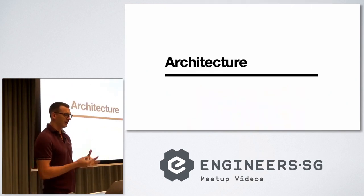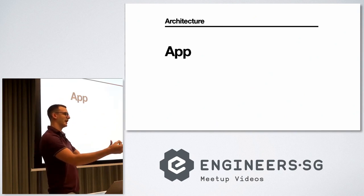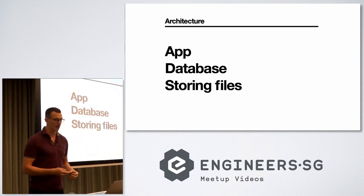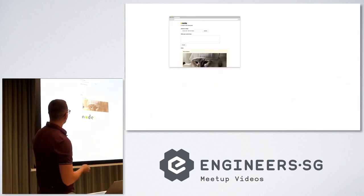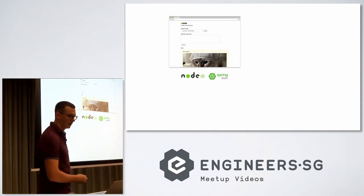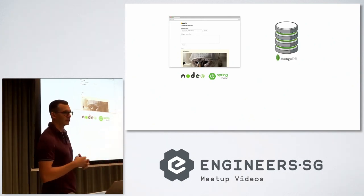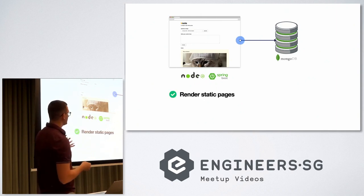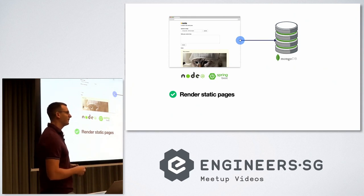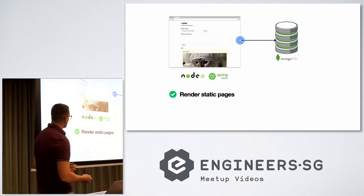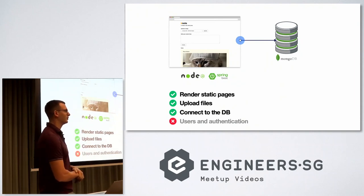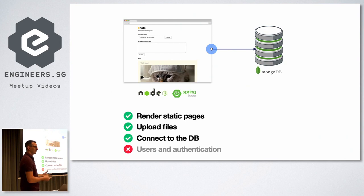The application has a couple of requirements: we need an application to serve pages, we need a database, and we need to store files somewhere. I'll use Node.js or Java to serve the application, and MongoDB as the database because I don't need to define a schema. We'll use static pages, so no React today. This is a simple application — you won't be able to deploy it to production with multiple users as-is, but it's a good opportunity to learn.